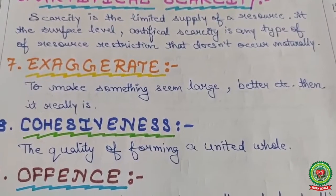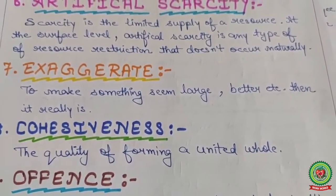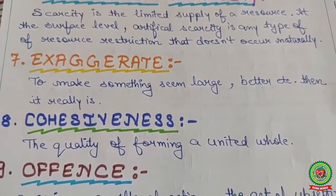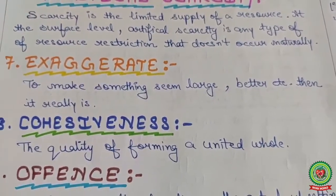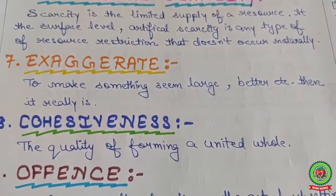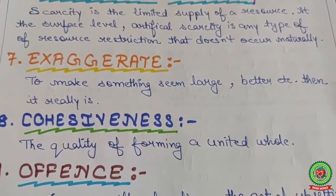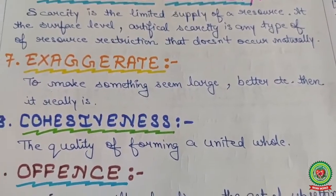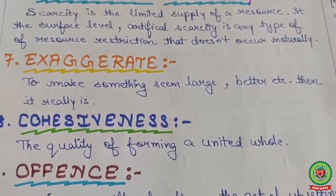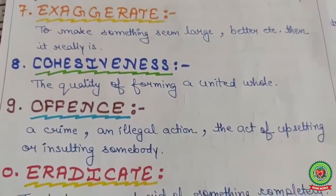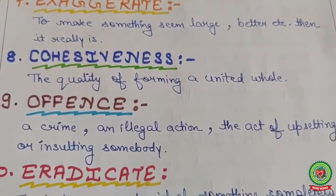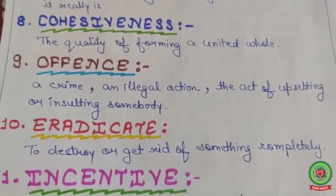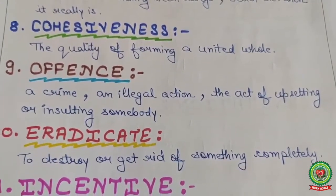Seventh keyword: exaggerate — to make something seem larger or better than it really is, such as in advertisements where a product is shown to be of very good quality, but when you actually receive the product, it is not of that specified quality. Eighth keyword: cohesiveness — the quality of forming a united whole.